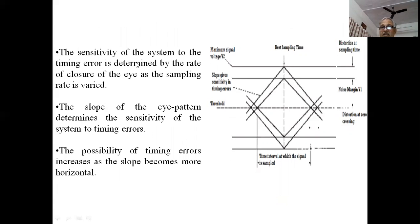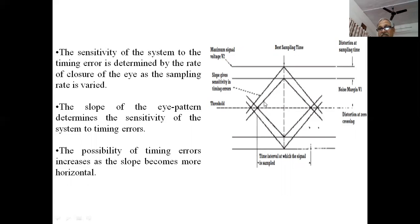The sensitivity of the system to timing error is determined by the rate of closure of the eye as the sampling time is varied. The slope of the eye pattern determines the sensitivity of the system to timing error. The possibility of timing errors increases as the slope becomes more horizontal — meaning the angle between the eye edge and the threshold line is smaller, so the edge becomes more parallel to the threshold.